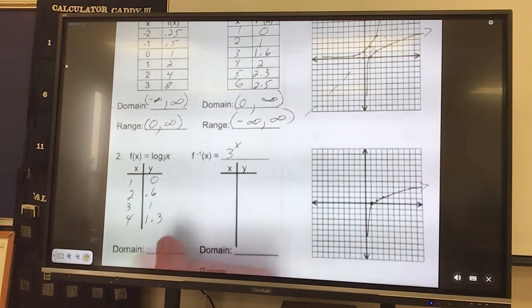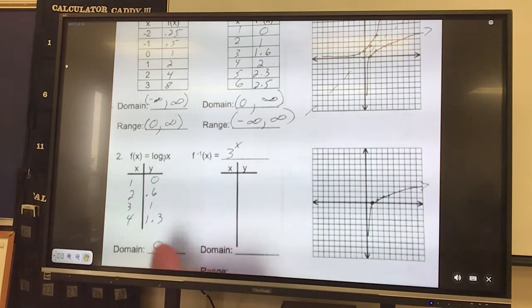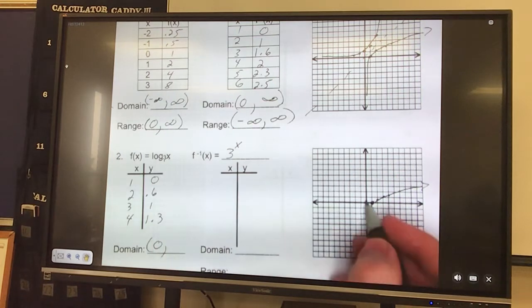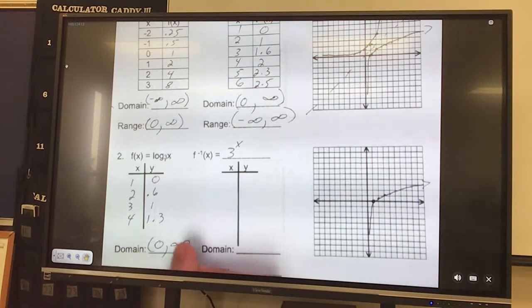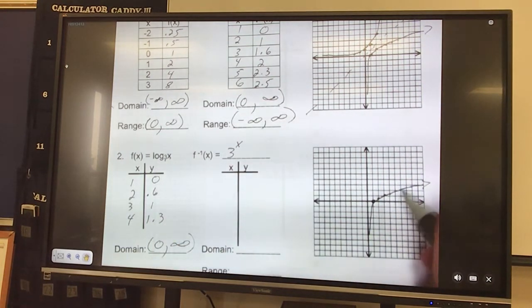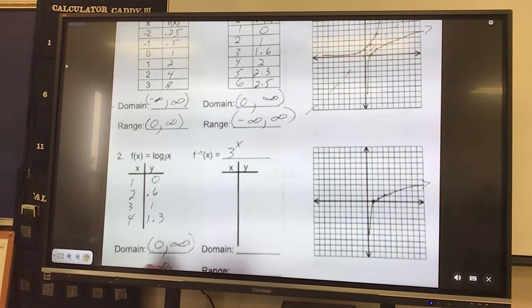Domain, how far left? It'll get close to the y-axis, which is 0, but it won't touch it. How far right? It goes forever, infinity. Range, how low? It'll go down forever, so negative infinity. And it'll go up forever, positive infinity.